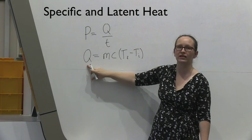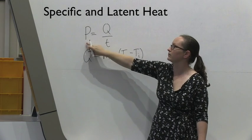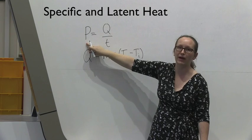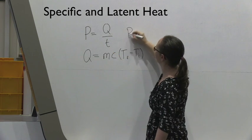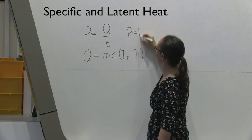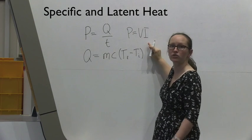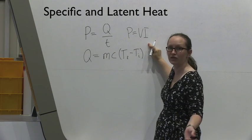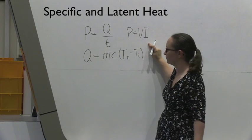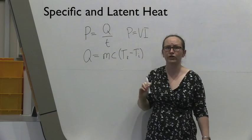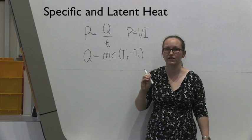You'll know how much energy you've added because you'll be able to measure the amount of power going in using P equals V times I — voltage times current — which are two quantities that you will be measuring with your multimeter. So this is how you're going to do the first part of the experiment.